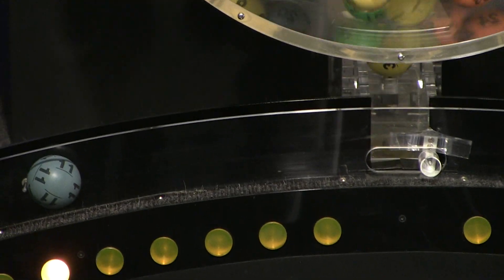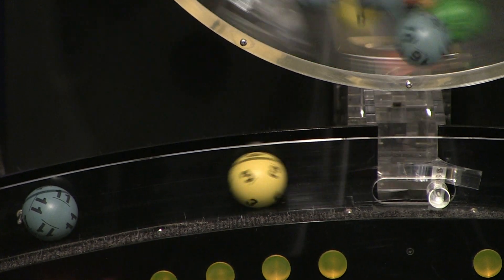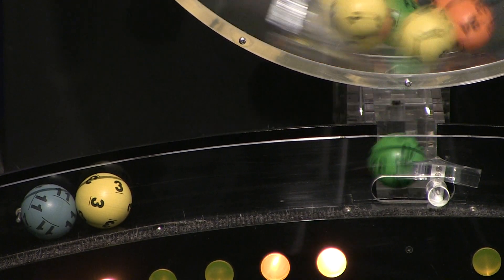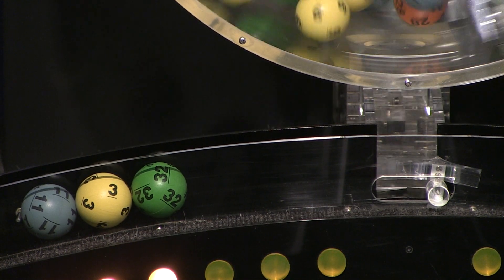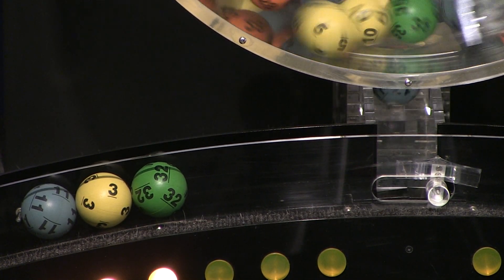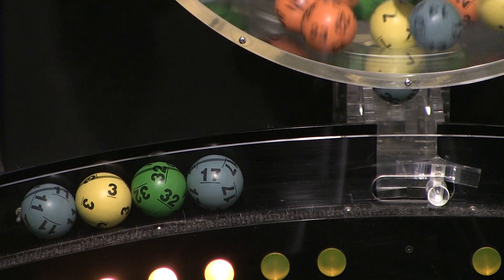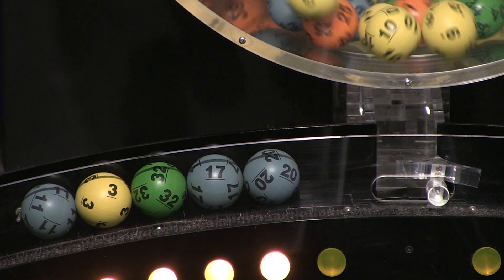Our first number up is number 11. Rolling right behind that, we have number 3, and here comes number 32. Up next is 17, and the final ball in this sequence is number 20.